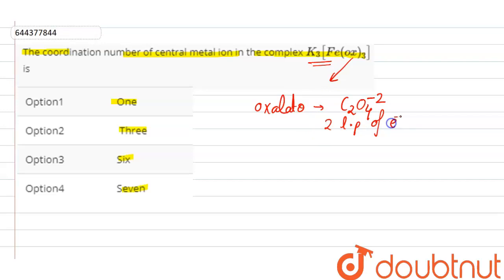As it is donating two lone pairs of electrons, one ligand has a coordination number of two.